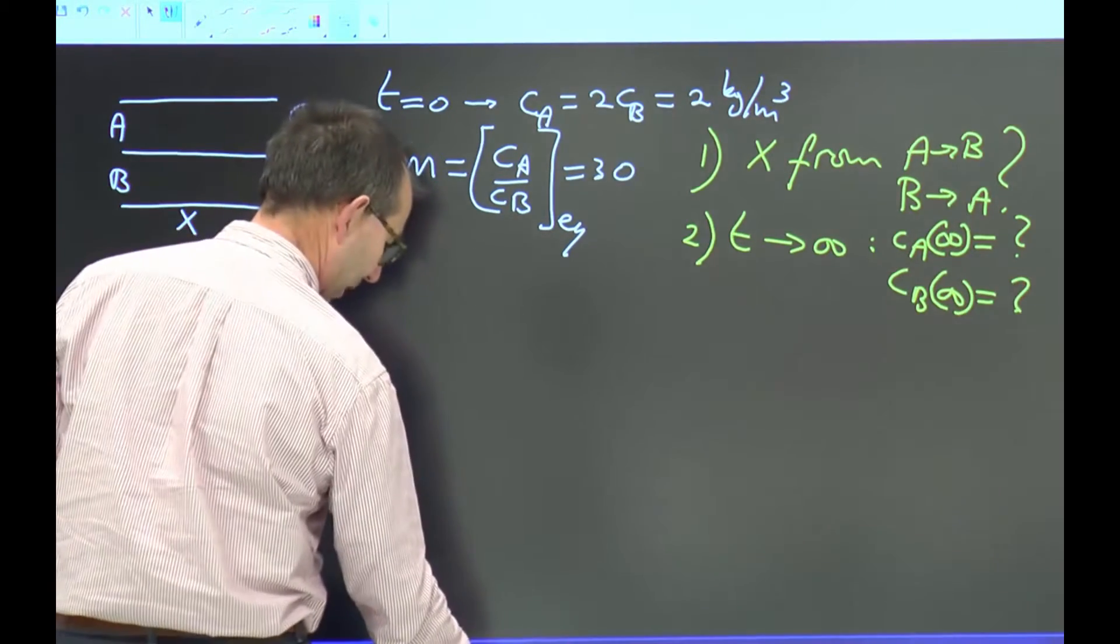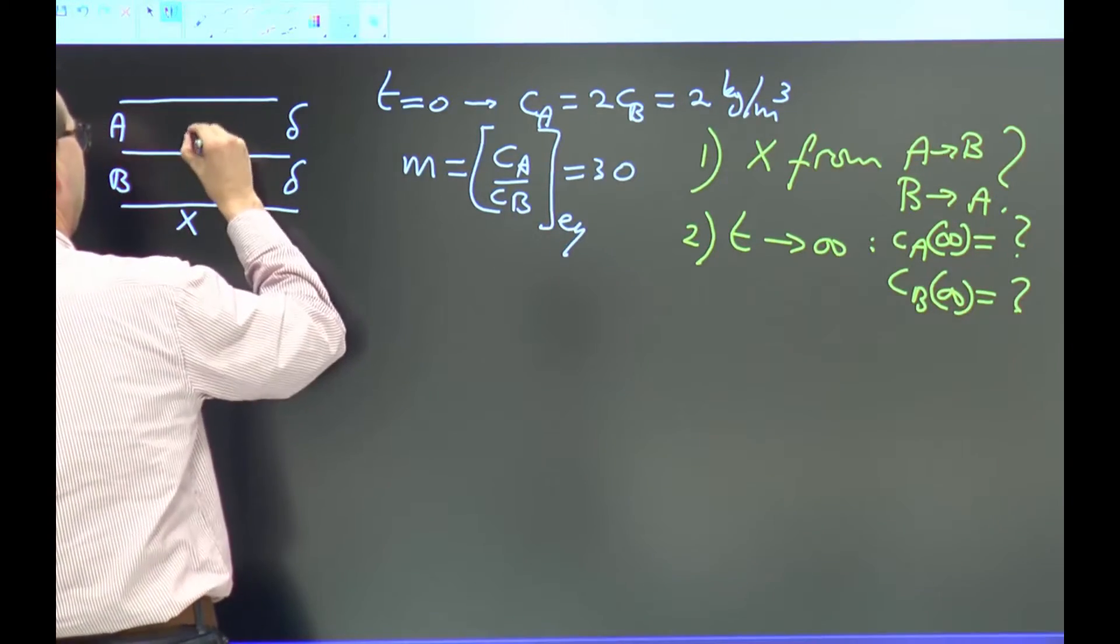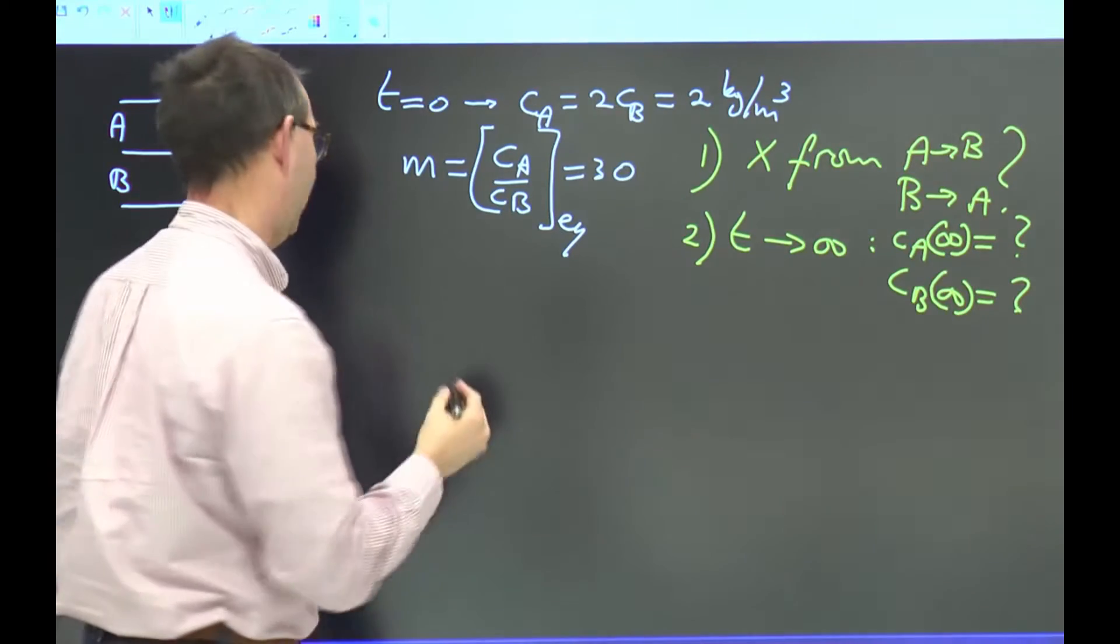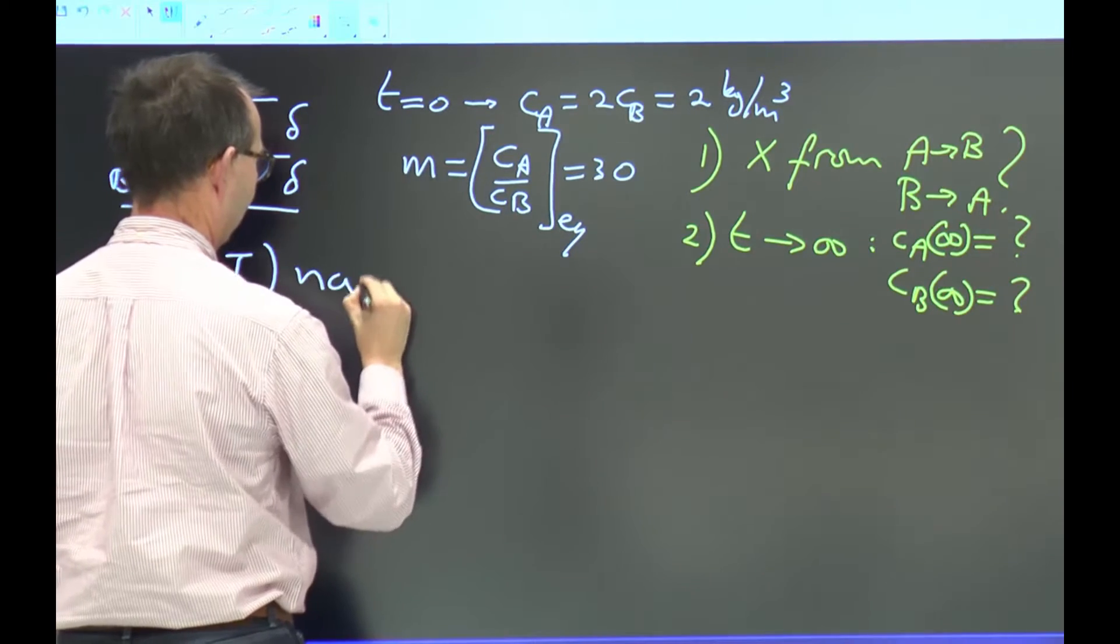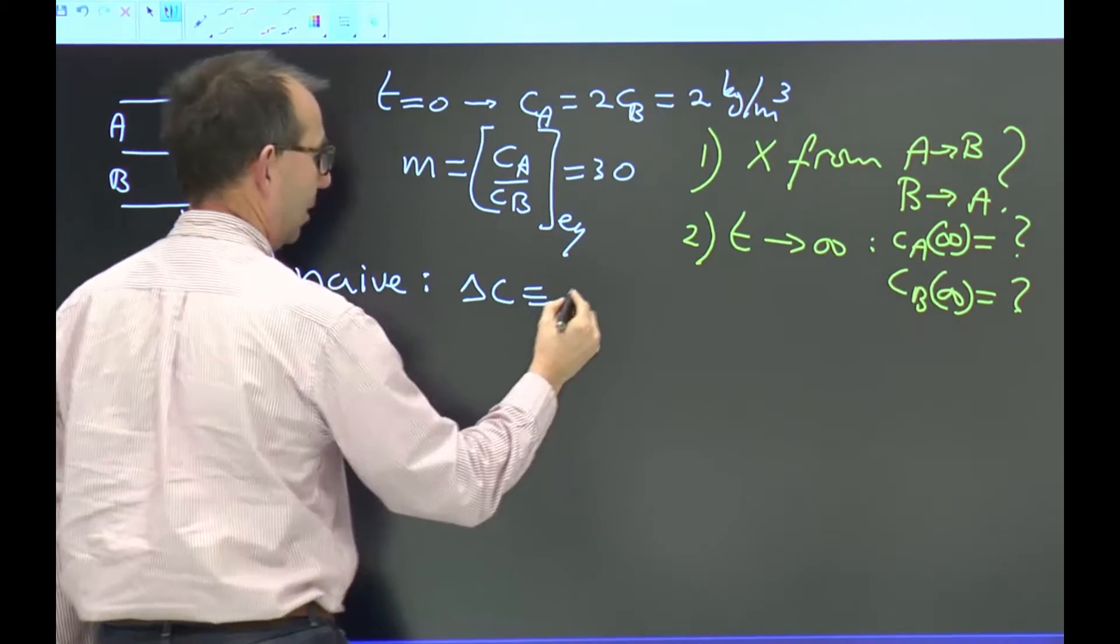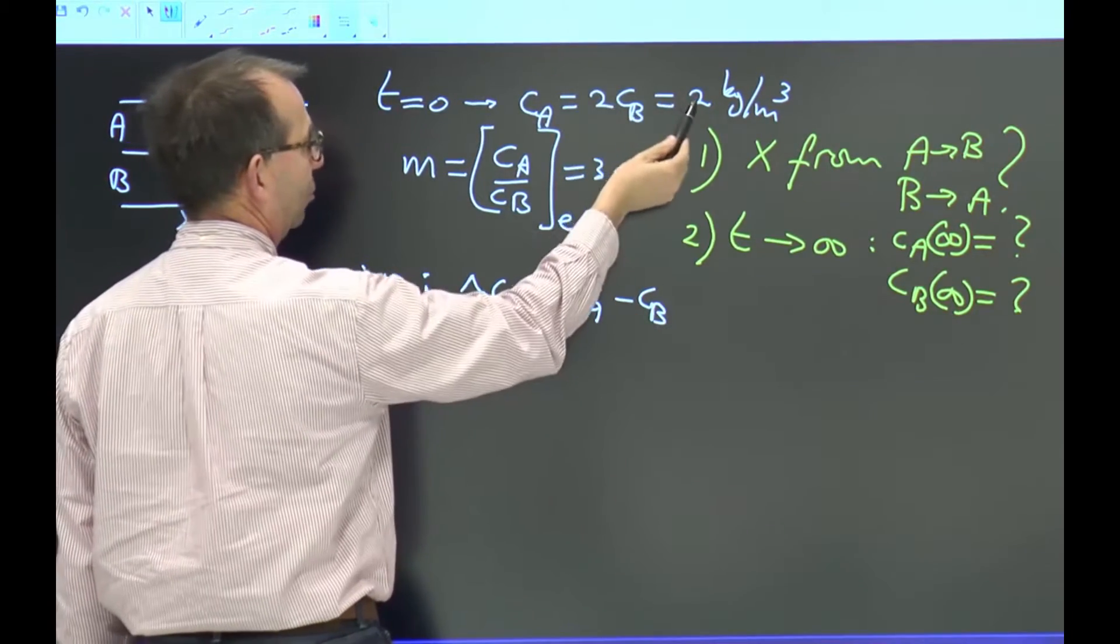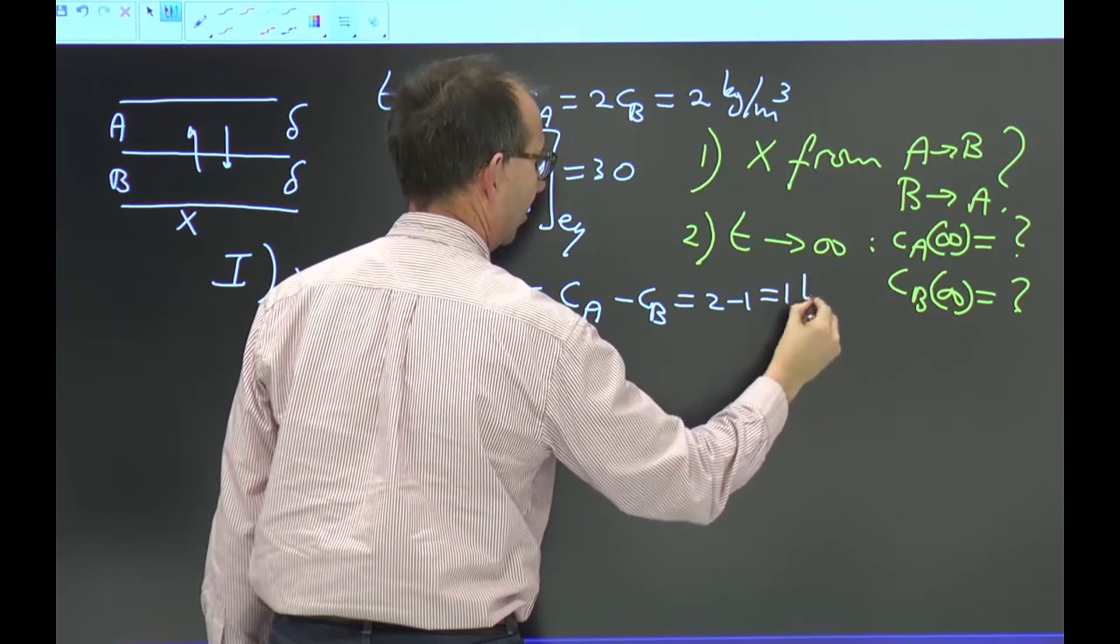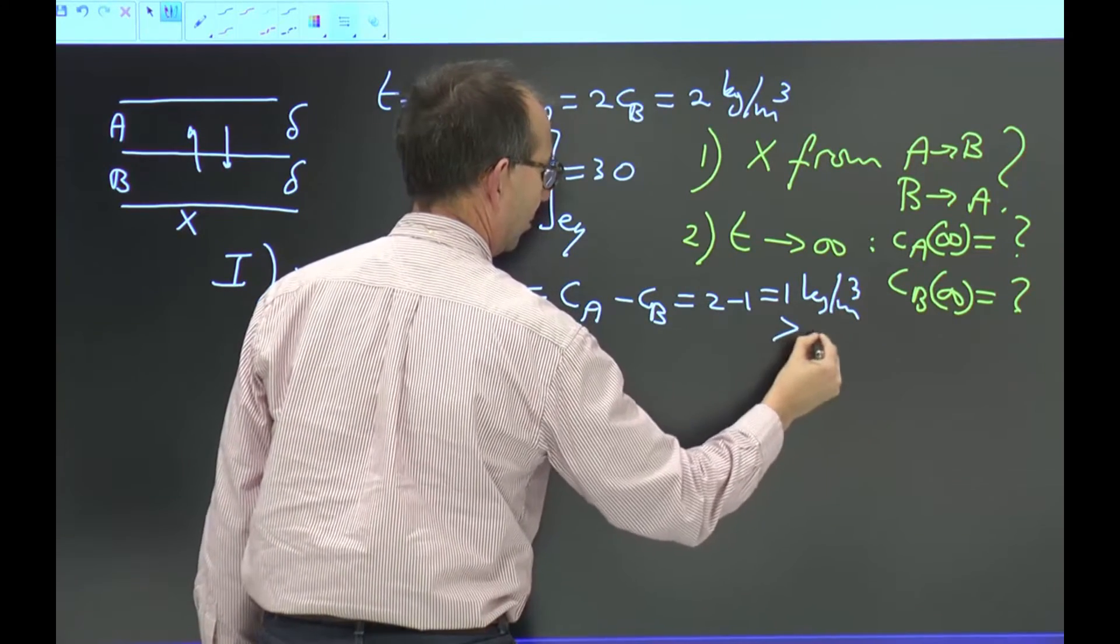Okay, back to white. First question I would like to address is transport in that direction or in that direction. For that, I need to inspect what the driving force is. And I could state as a first idea, which I call the naive idea, that the driving force, ΔC, is by definition the concentration in A minus the concentration in B, which in this case would be 2 minus 1, is 1 kilogram per cube, which is positive,